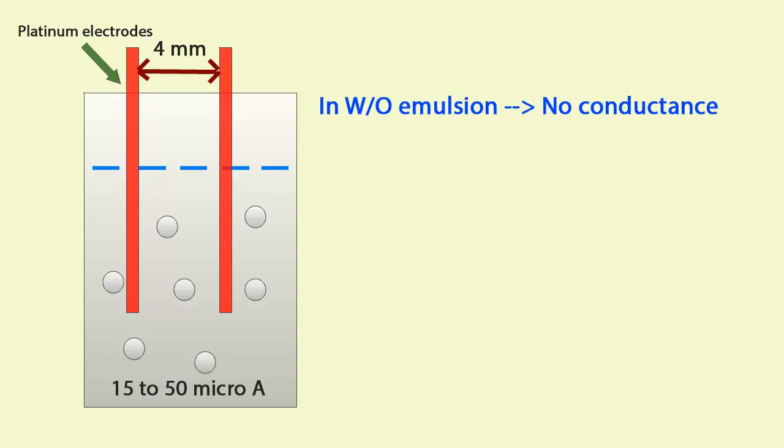In case of water in oil emulsion, conductance will not be observed because oil is a poor conductor of electricity. During storage if conductance is observed, then it indicates that coalescence has been started.